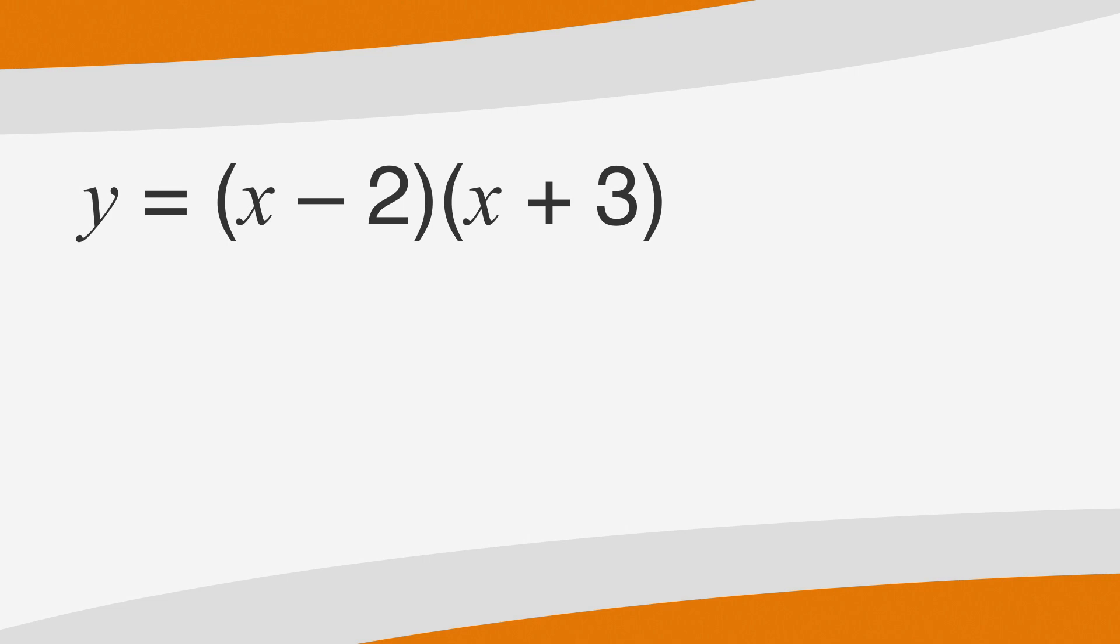So we want to start by checking out the quantity of x minus 2. Set x minus 2 equal to zero. Add two to both sides, and we find that one of the zeros of this equation is x equals 2. But there's a second set of parentheses, so let's check that out as well. If we can set the numbers in these parentheses equal to zero, we've found another zero of our equation. So let's set x plus 3 equal to zero. Then just a bit of algebra by subtracting 3 from both sides, and we find the second zero of this equation, x equals negative 3.